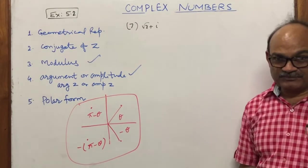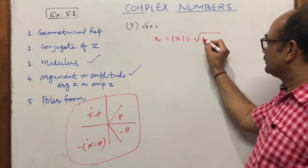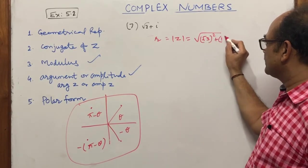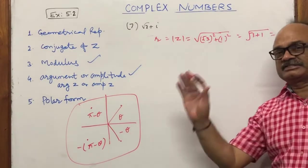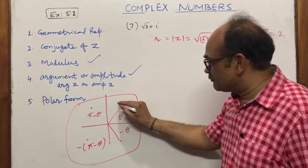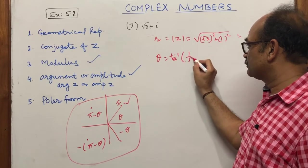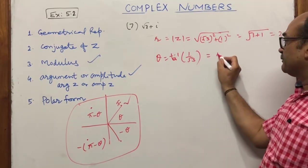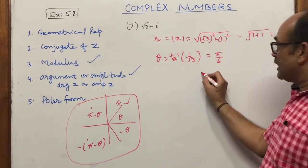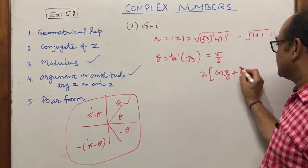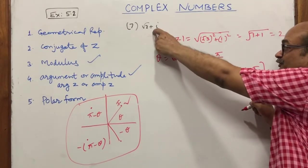For question 8, consider z = √3 + iota. Step 1 — modulus: r = √(√3² + 1²) = √(3 + 1) = √4 = 2. Step 2 — the point is in quadrant 1. So argument θ = tan⁻¹(1/√3) = π/6 (30°). Since it is in quadrant 1, θ = π/6. Therefore the polar form is 2(cos π/6 + iota·sin π/6).